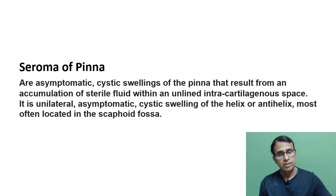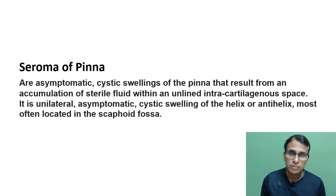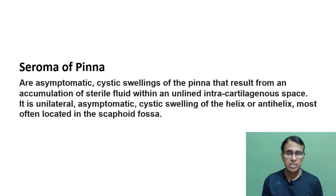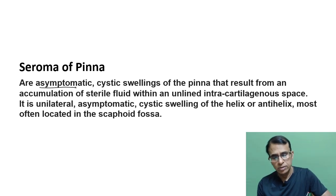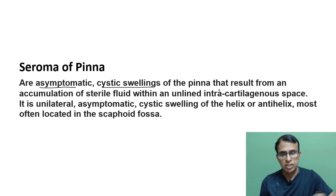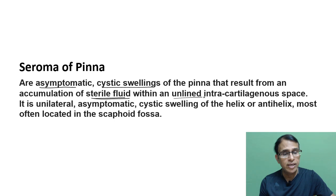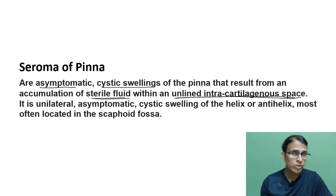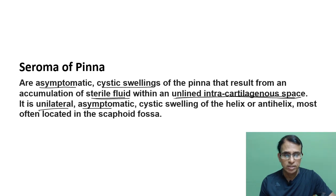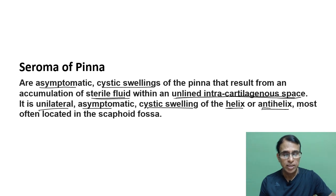Next is seroma of the pinna. 'Seroma' comes from serous fluid — it's a water-like fluid collection forming a cyst between the perichondrium and the cartilage. It is usually asymptomatic, presenting as a cystic swelling from accumulation of sterile serous fluid in the space between cartilage and perichondrium. It is unilateral and asymptomatic, and the most common sites are the helix, antihelix, and scaphoid fossa.